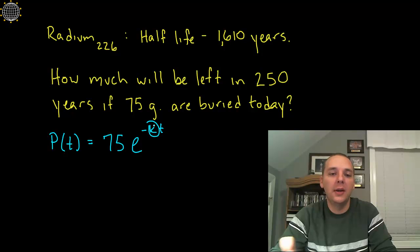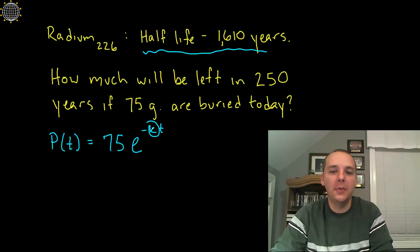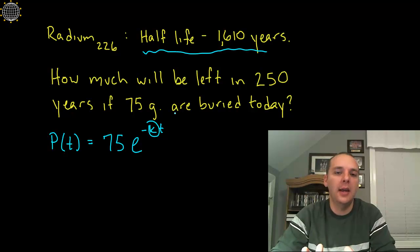Now the problem here is I don't know what K is. I don't know what the decay rate is, but that's what the half-life hints at. Now can I take 1610 and sub it in for K? No, not exactly. 1610 is time, that's in years, that's not a decimal indicating growth rate. But in some roundabout way it does seem to indicate growth rate, but we need to hash out those details.